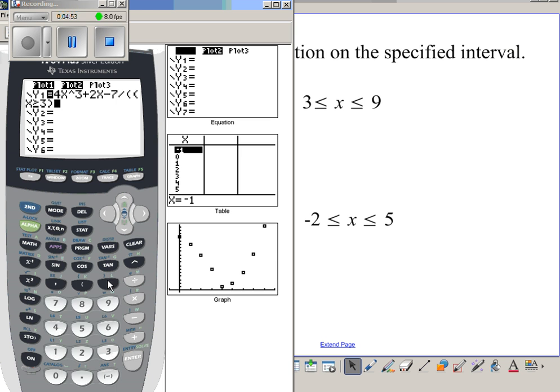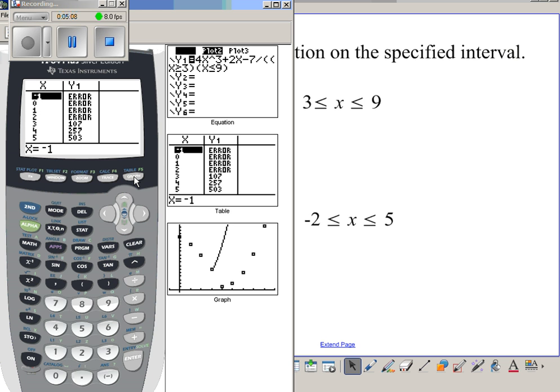And then I also will have x is less than or equal to 9, and then I can look at my graph. This is only graphing a portion. You can see I still have my plots on. If I turn my plots off, then my points will disappear and here's this equation.